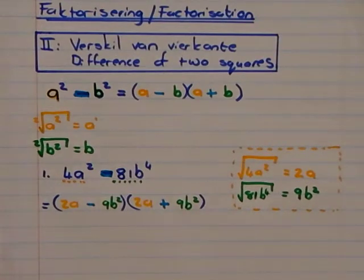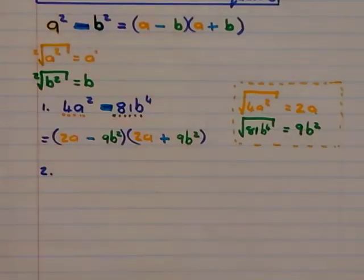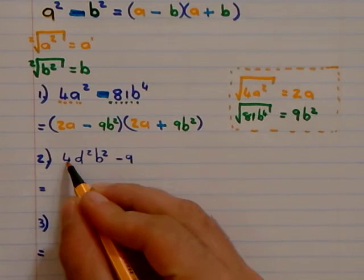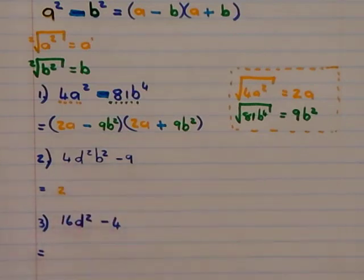Sure, let me do another example. I want you to try to do the next example on your own. So I have two examples there. I want you to try to pause the video. Try to do it on your own. So square root of 4 is 2.